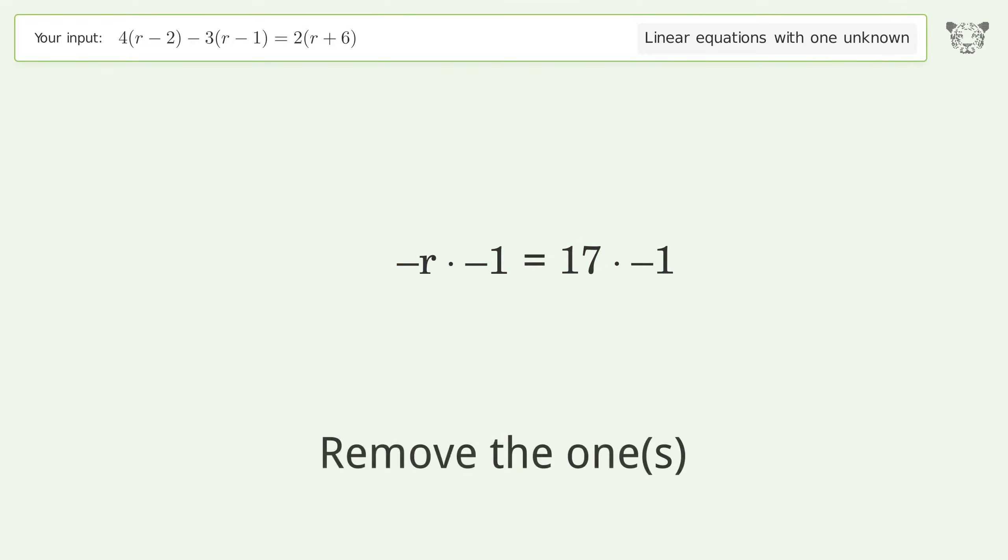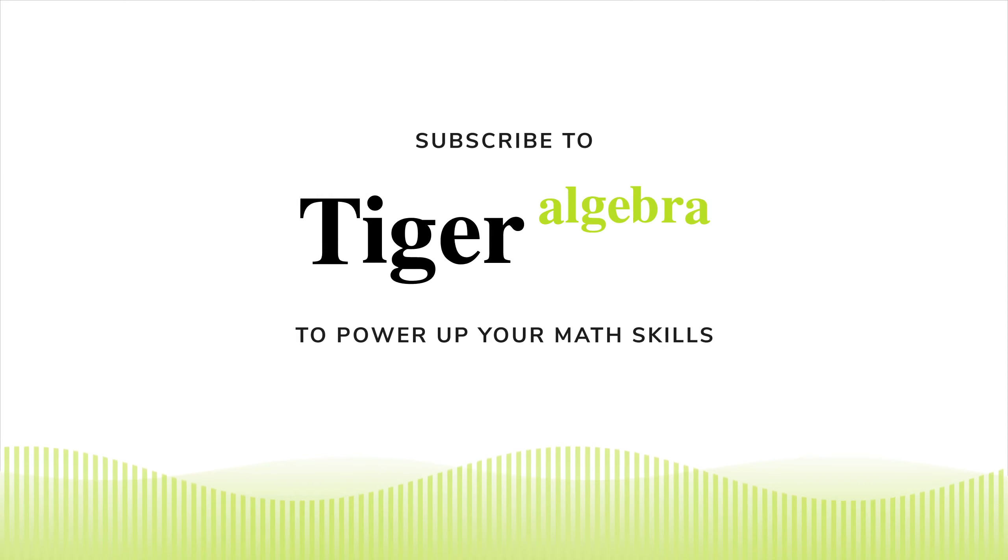Remove the 1s. Simplify the arithmetic. And so the final result is r equals negative 17.